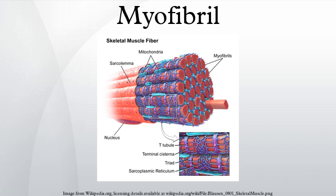ADP is thereby released. ATP presents itself, and the myosin heads disconnect from the actin to grab the ATP. The ATP is then broken down into ADP and phosphate. Energy is released and stored in the myosin head to utilize for later movement. The myosin heads now return to their upright relaxed position. If calcium is present, the process is repeated.